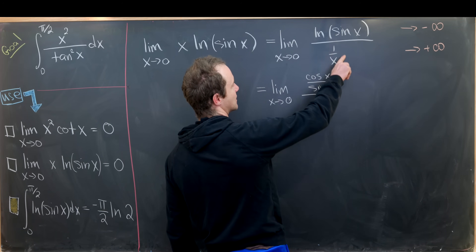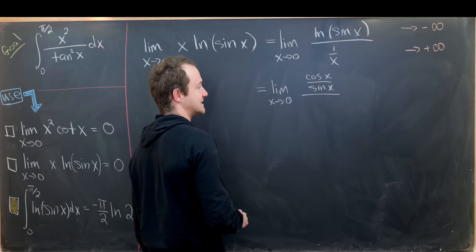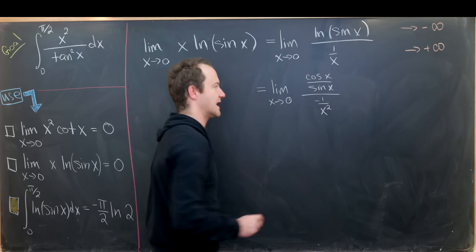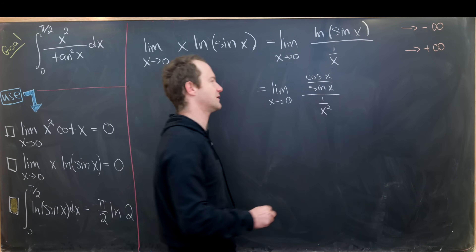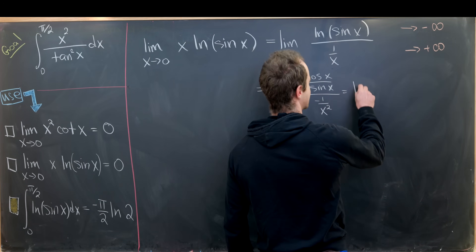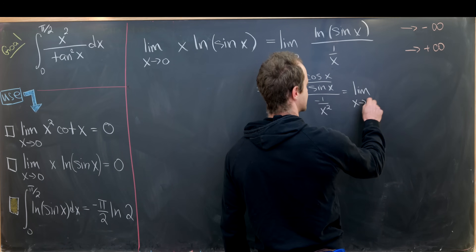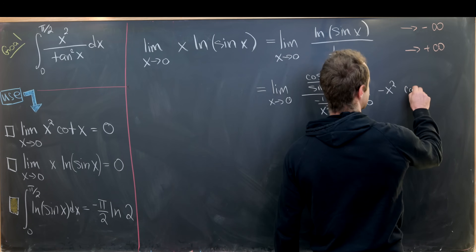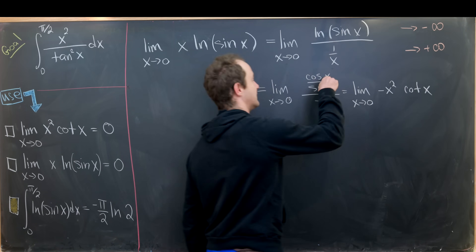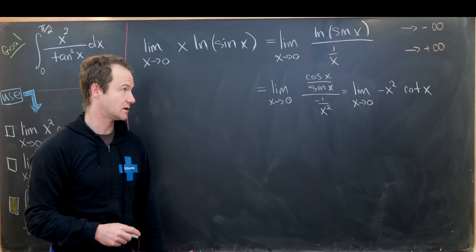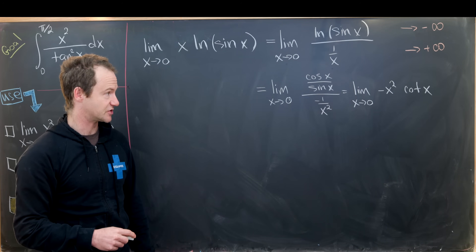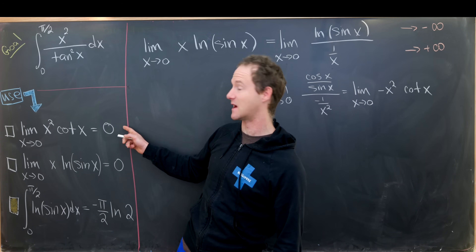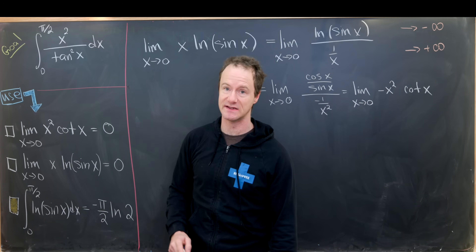Using the power rule and visualizing 1/x as x⁻¹, its derivative is −1/x². After simplification, this gives the limit as x→0 of −x²·cot(x), since cos/sin = cot. Notice this is exactly the first limit, up to a sign.